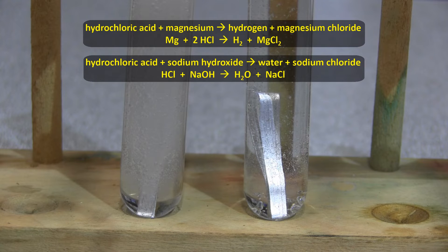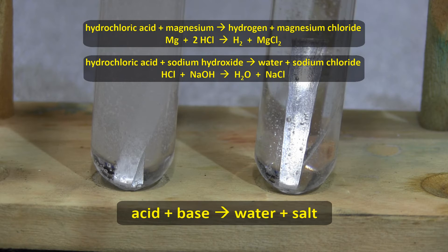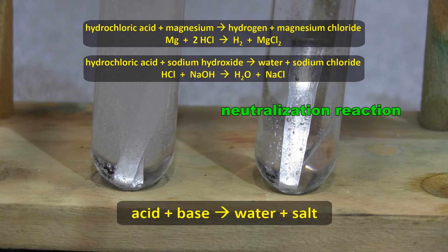The acid has chemically reacted with the base, so now I just have a piece of magnesium lying in a test tube that has water and salt in it. So, in general, an acid plus a base produces water plus a type of salt, and this is called a neutralization reaction.